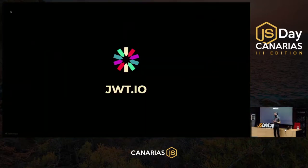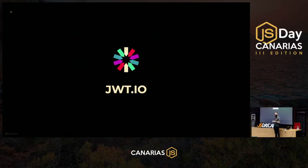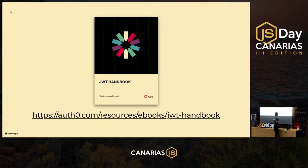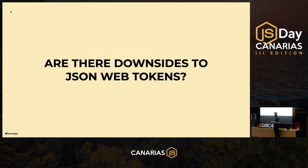jwt.io lets you debug and create JSON web tokens and see what's inside them. It contains more information and doesn't store your tokens anywhere — it all happens on the front end, so it's safe to use. There's also a handbook — a free ebook — that goes in depth on JSON web tokens and security issues you might encounter.